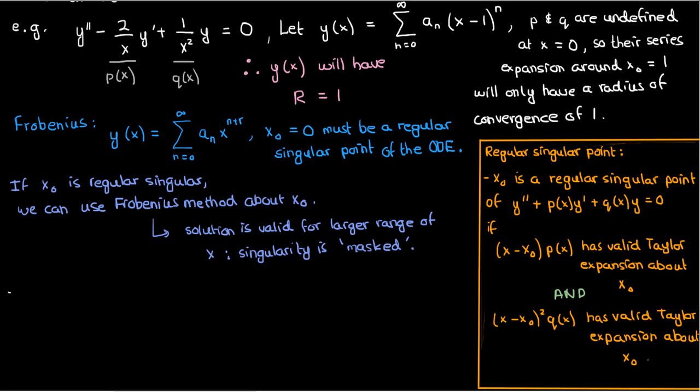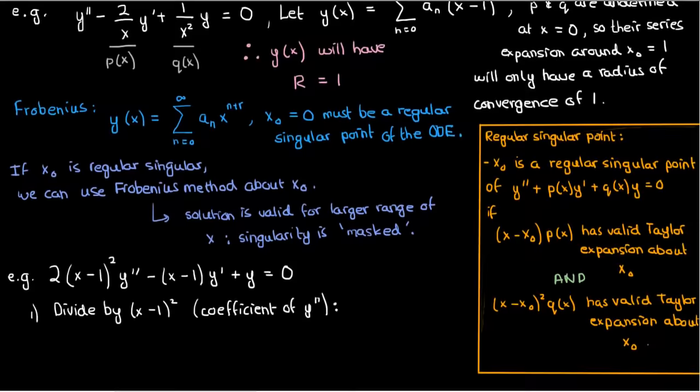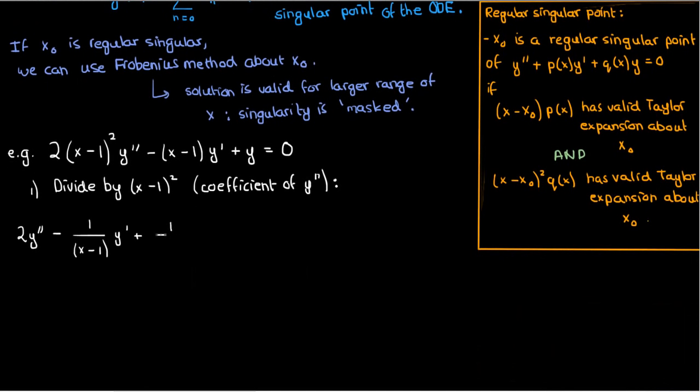So let's take another example and try to solve it using Frobenius' method. Something like 2(x-1)²y'' - (x-1)y' + y = 0. The first step here is to find the regular singular points. How we do that is we begin by dividing the entire ODE by the coefficient of the second derivative term in order to convert it to standard form, and this is what we have: 2y'' - 1/(x-1) y' + 1/(x-1)² y = 0.